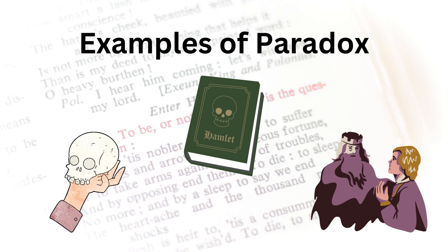Additionally, in Shakespeare's tragedy Hamlet, the titular character grapples with the paradox of action versus inaction as he seeks revenge for his father's murder. Hamlet's internal conflict, famously encapsulated in the soliloquy "To be or not to be," reflects the paradoxical nature of decision-making in the face of moral ambiguity and uncertainty. As Hamlet weighs the consequences of his actions and struggles to reconcile his duty to his father with his own sense of morality, Shakespeare explores the complexities of human nature and the existential dilemmas that confront us all. Through Hamlet's journey, readers are confronted with the paradoxical nature of choice in the eternal struggle to find meaning and purpose in a world fraught with contradictions.